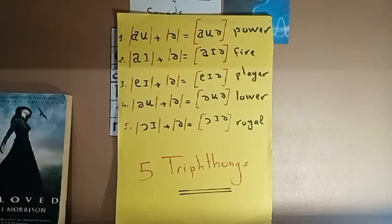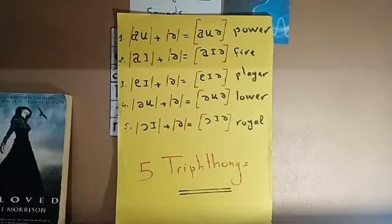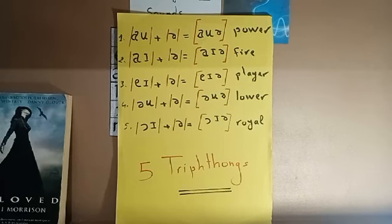Thus the English five triphthongs are: aua, aia, eia, oua, and oia. This is 'Triphthongs' on the Sounds YouTube channel. Thanks for watching, goodbye.